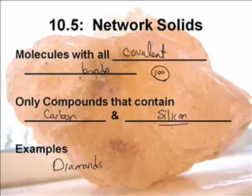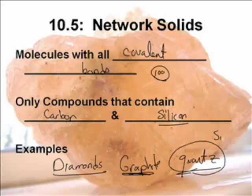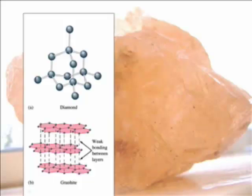The examples of this are diamonds. I'd love to show you diamonds, but I don't have one. Diamonds, they are a girl's best friend. Graphite, quartz - these are the big three to remember. And sand, sand of course is quartz, silicon dioxide. It has a very high boiling point and melting point.